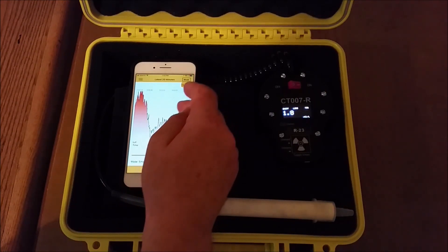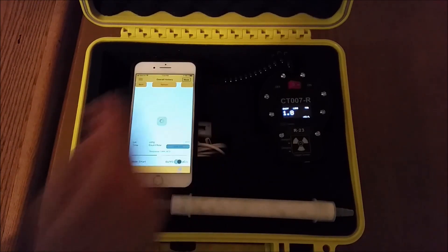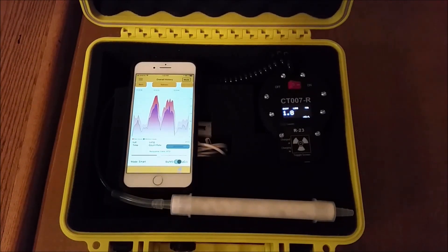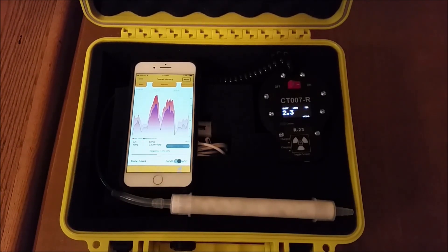We can hit the view history button to reveal the entire graph since we've started. There are too many data points to show on this graph so some are combined. The bottom line on the graph shows the lowest readings we got during that time period and the top line shows the highest readings we've received during that time period.